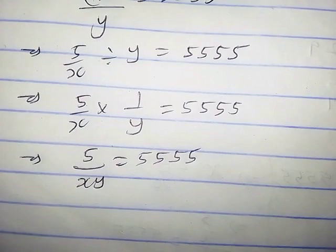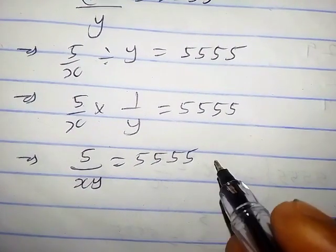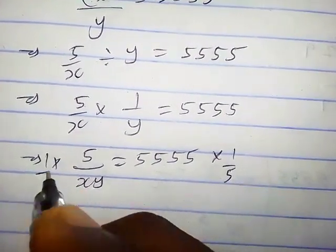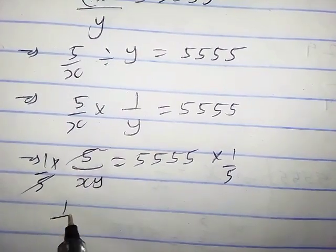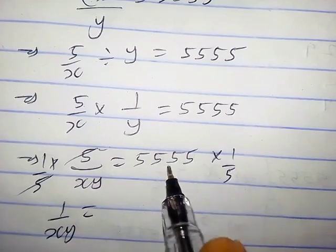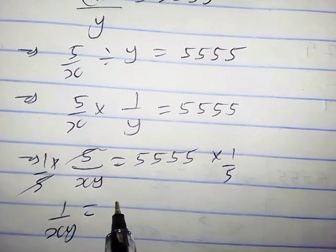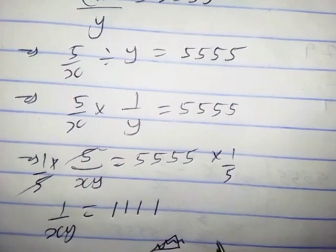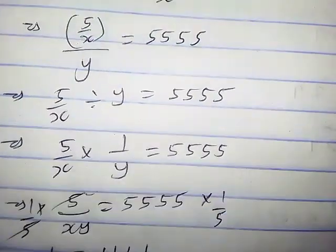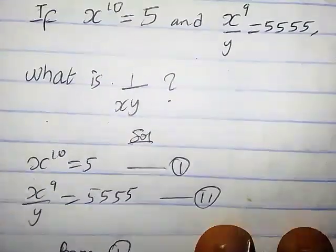Now let's multiply both sides of this equation by 1 over 5. On the left-hand side, 5 cancels 5, so we are left with 1 over xy. And we divide this by 5, we're gonna have 1111. So this is exactly what we are looking for—that is the value of 1 over xy.